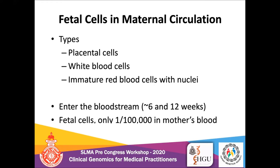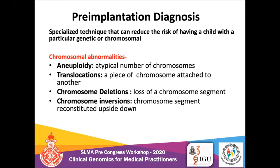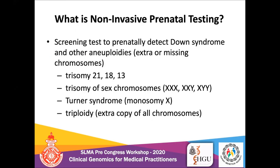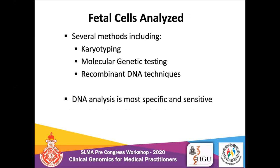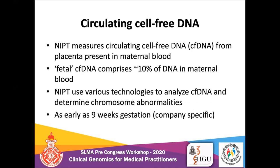There are different fetal cells in the maternal circulation: placental cells, white blood cells, and immature nucleated red blood cells. They enter the bloodstream between 6 and 12 weeks of gestation. Fetal cells represent only 1 in 100,000 cells in the mother's blood.